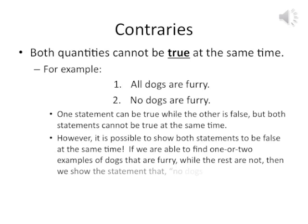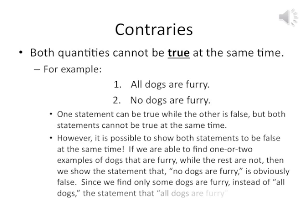For example, if we find one or two dogs that are furry while the rest are not, then we show that 'no dogs are furry' is obviously false. Also, since only some dogs are furry instead of all dogs, 'all dogs are furry' is patently false as well. So both universal quantities — 'all dogs are furry' and 'no dogs are furry' — can both be false, while the particular quantity 'some' is true. That's the idea of a contrary, and it only happens with the universals.